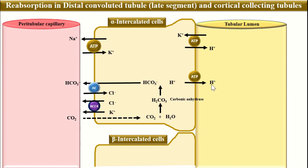What happens with this hydrogen ion? The hydrogen ion secreted into the tubular lumen leads to a decrease in the pH of the urine. The pH of the urine can decrease to as low as 4.5. These hydrogen ions are very important in acidification of the urine. The hydrogen ions in the tubular lumen are buffered by two important urinary buffers: the phosphate buffer and the ammonia buffer.